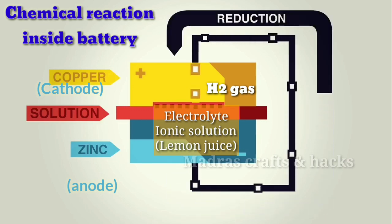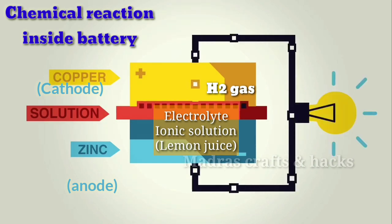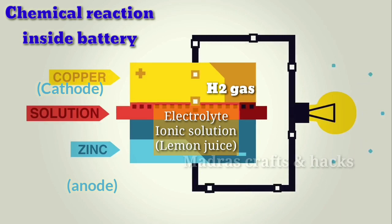This oxidation-reduction cycle leads to continuous flow of electrons between the electrodes. As I said earlier, flow of electrons is called current. This is how lemon battery produces electricity or current.